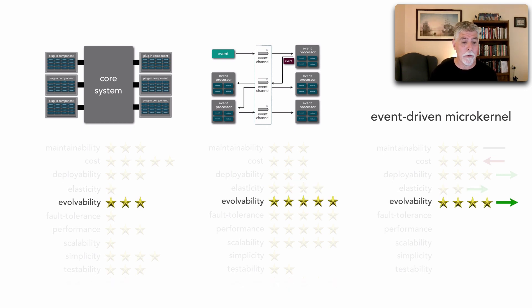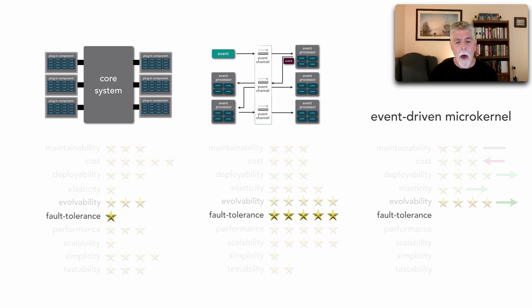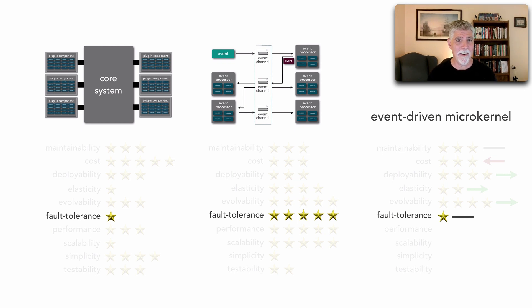Evolvability also gains an extra star — we had three stars before and now we gain one more — because adding additional functionality is a lot easier now that we don't have the deployment of a usually monolithic microkernel architecture. From a fault tolerance perspective, microkernel has one star because it's usually deployed as a monolith, while event-driven has five stars. Surprisingly, there's no change here. The reason is that the core system is our single point of failure — microkernel requires all requests to come into the core system first before sending messages to each plugin, so fault tolerance still remains at one star.